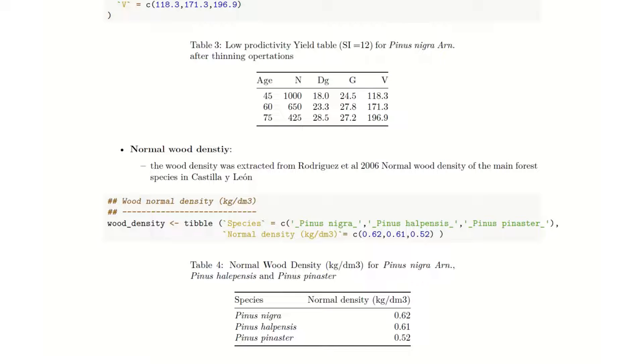Finally, the last parameter or information that we need to run our exercise is the normal wood density. The normal wood density is the relationship of the wood to water. This information was extracted from Rodriguez et al. 2006.